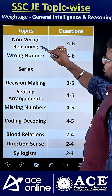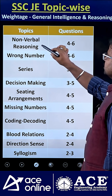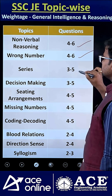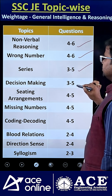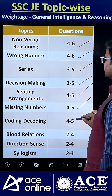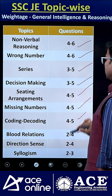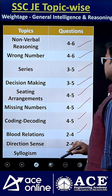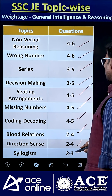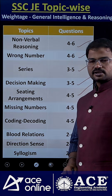In general intelligence and reasoning, you are getting 50 questions. Non-verbal reasoning 4 to 6, wrong numbers 4 to 6, series 3 to 5, decision making 3 to 5, seating arrangement 4 to 5, missing numbers 4 to 5, coding and decoding 4 to 5, blood relations 2 to 4, direction sense 2 to 4, and syllogisms 2 to 3. Thank you.